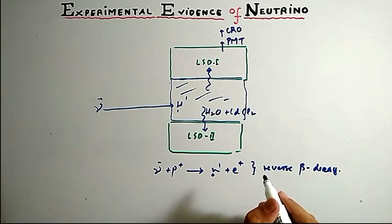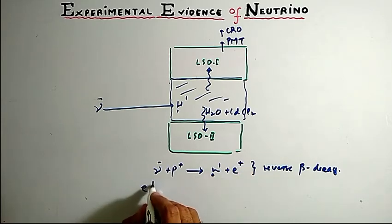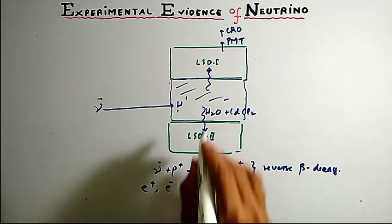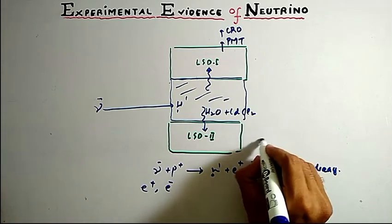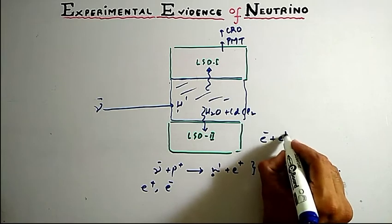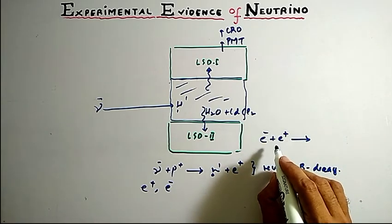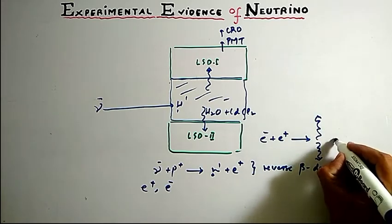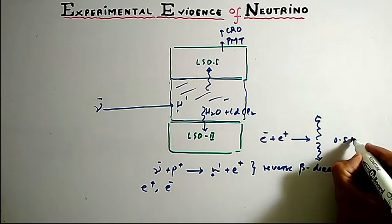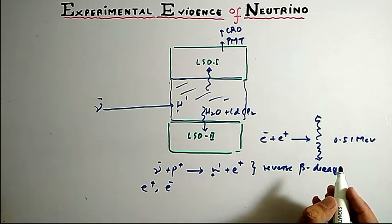Now the positron was captured by an electron in water and hence annihilated. Electron plus positron was annihilated along with emission of two gammas, each with energy 0.51 MeV.